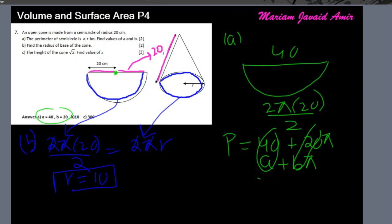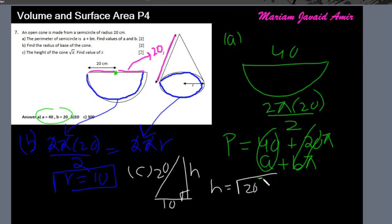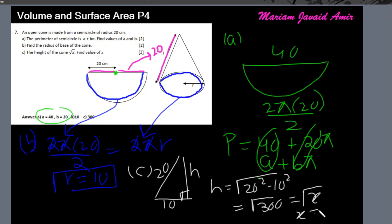Part C: the height of the cone is √x, find the value of x. The slant height is 20 and the base radius is 10, so the height = √(20² − 10²) = √(400 − 100) = √300. Therefore x = 300. That's the end of the worksheet — see you next time, take care.